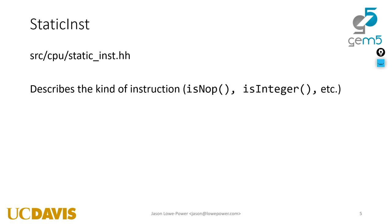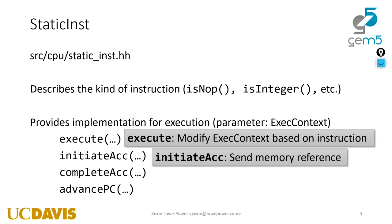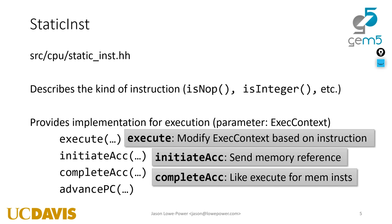The static instruction defines what kind of instruction it is — functions like is_noop, is_integer, is_memory_operation — and provides four key functions. 'Execute' does the actual operation: for an add instruction it takes two registers and modifies a third. For memory references, 'initiate_access' calculates the effective address and prepares a memory request, while 'complete_access' is like the execute for memory instructions and writes the memory data into registers.